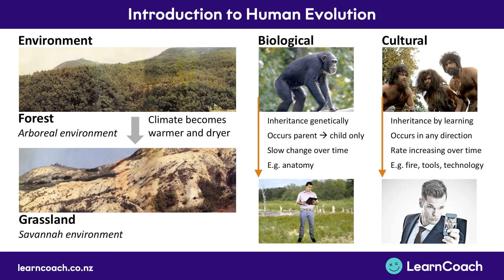The other type of change is cultural change — inheritance by learning. This can go in any direction, from older generations to younger or back the other way, and the rate is increasing over time. Examples include learning how to use fire, heating, light, tools, and technology. This is everything you need to know to set you up for the human evolution topic. For all the details and example questions, watch the future videos.